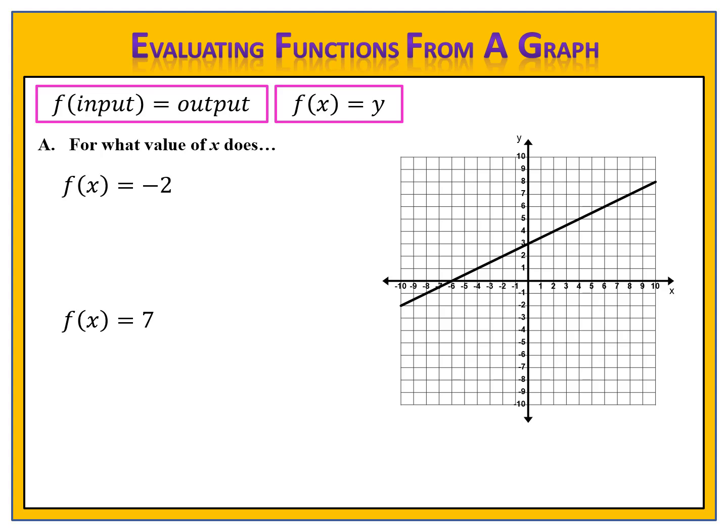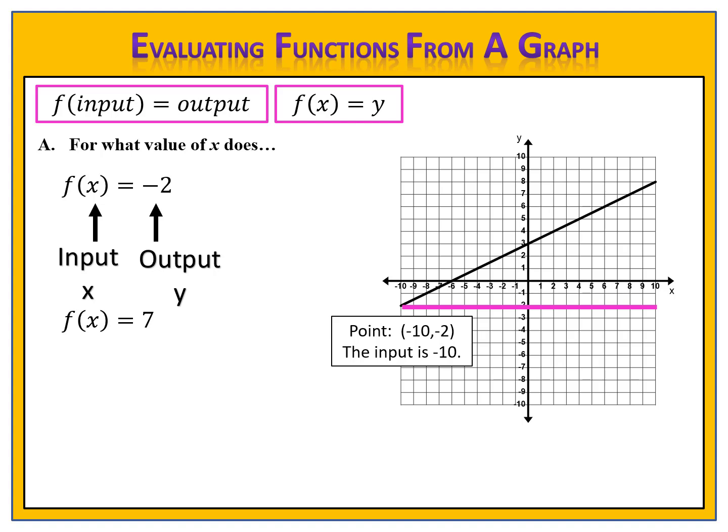Here are two problems for you to try: for what value of x does f of x equal negative 2, and for what value of x does f of x equal 7? Please pause the video and come back when you're ready to check. For f of x equals negative 2: the output is negative 2, so we draw a horizontal line at negative 2. The graph intersects at the point (−10, −2), so the input is negative 10. Therefore x equals negative 10.